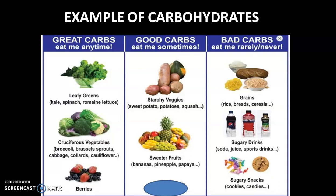There are good carbs and bad carbs. Good carbs you can eat anytime include leafy green vegetables like kale, spinach, and romaine lettuce. Good carbs to eat sometimes — meaning occasionally — include starchy vegetables like sweet potato, potato, and squash, and sweeter fruits like bananas, pineapple, and papaya.